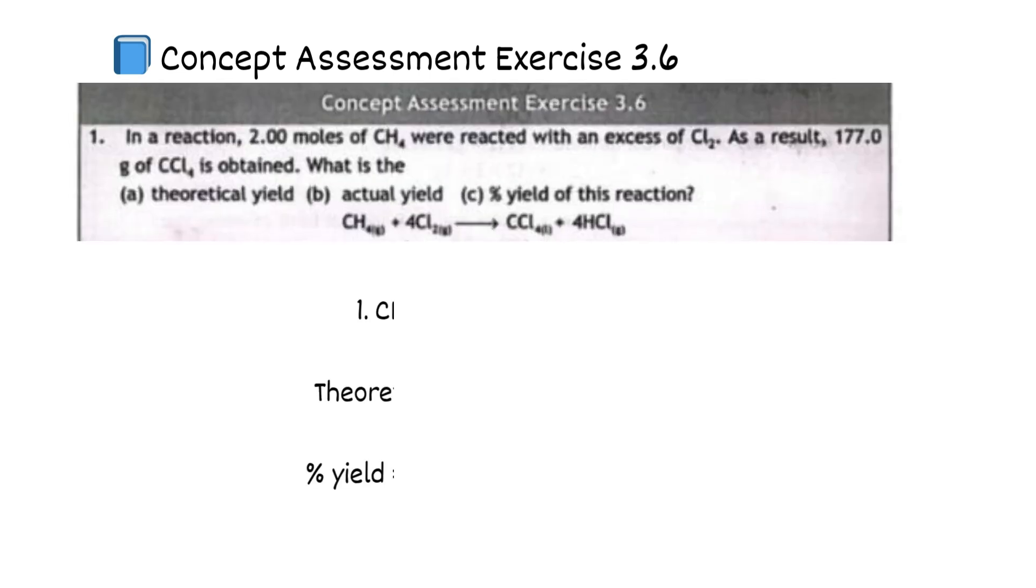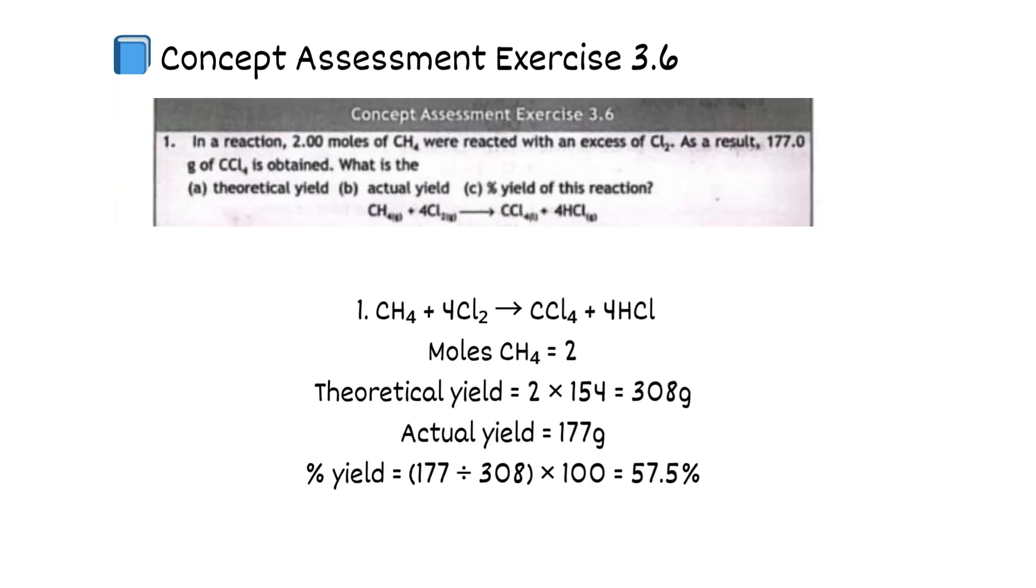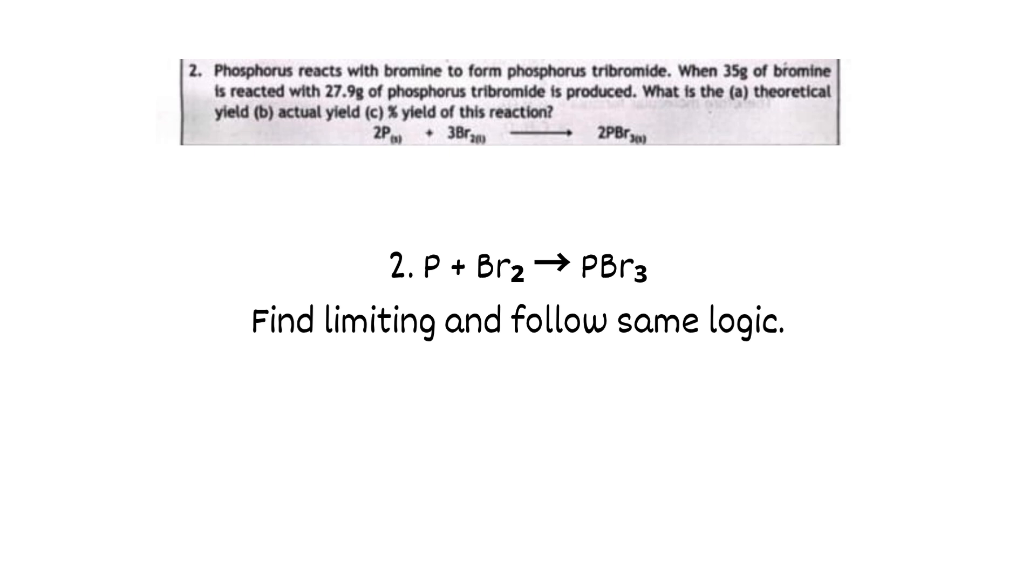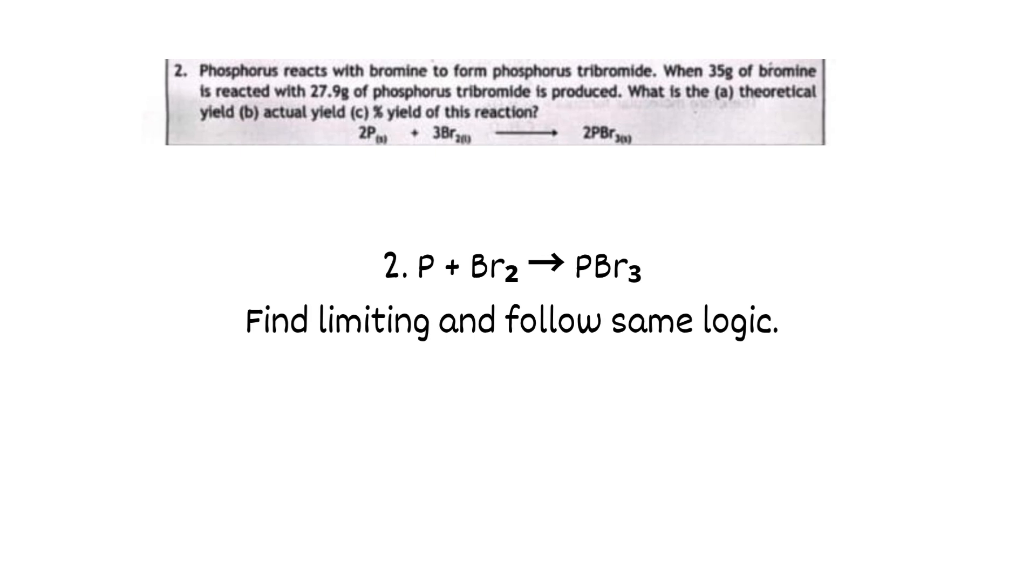Concept assessment exercise 3.6. CH4 plus 4Cl2 equals CCl4 plus 4HCl. Moles CH4 equals 2. Theoretical yield equals 2 times 154 equals 308 grams. Actual yield equals 177 grams. Percent yield equals 177 divided by 308 times 100 equals 57.5%. For P plus Br2 equals PBr3, find limiting and follow same logic.